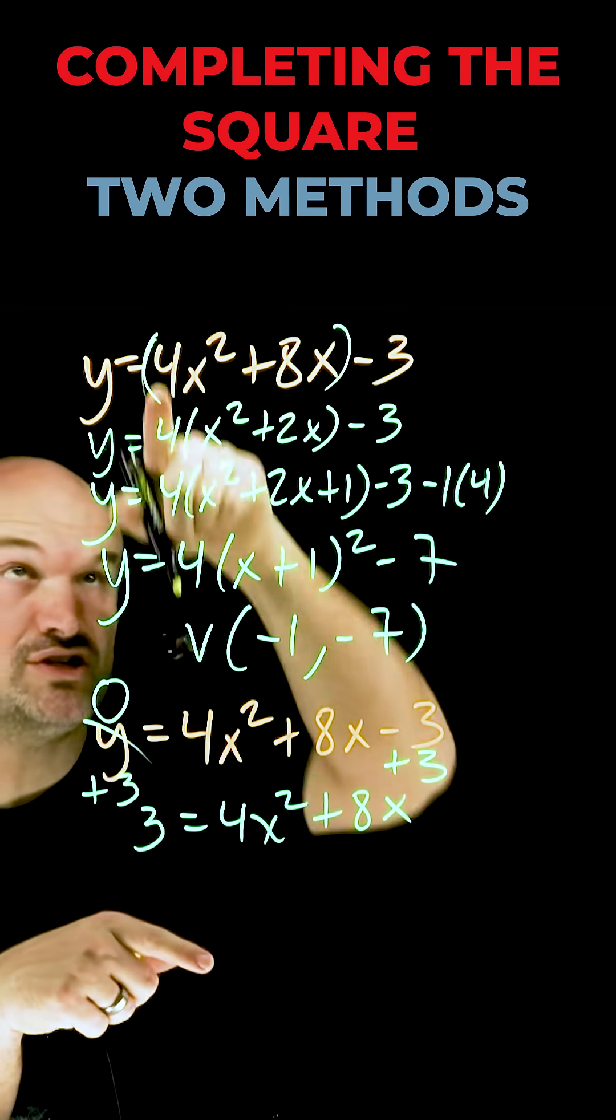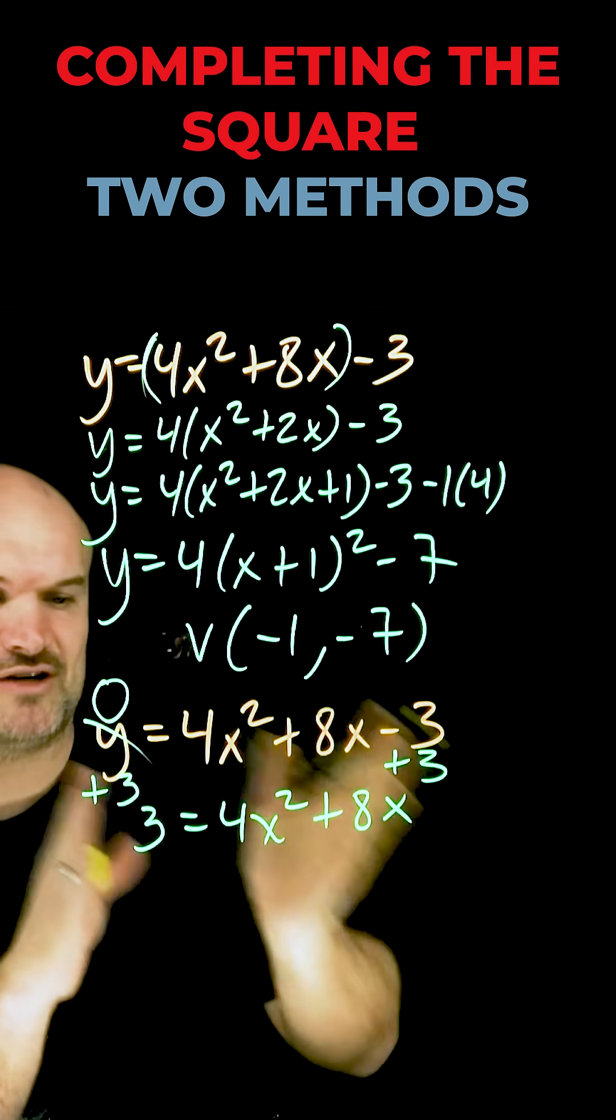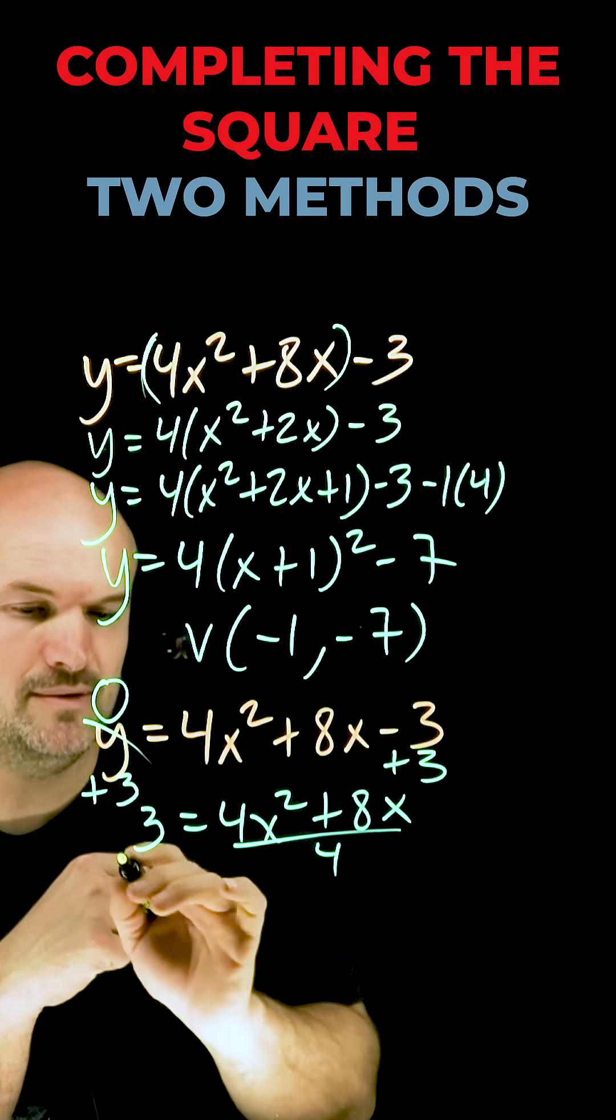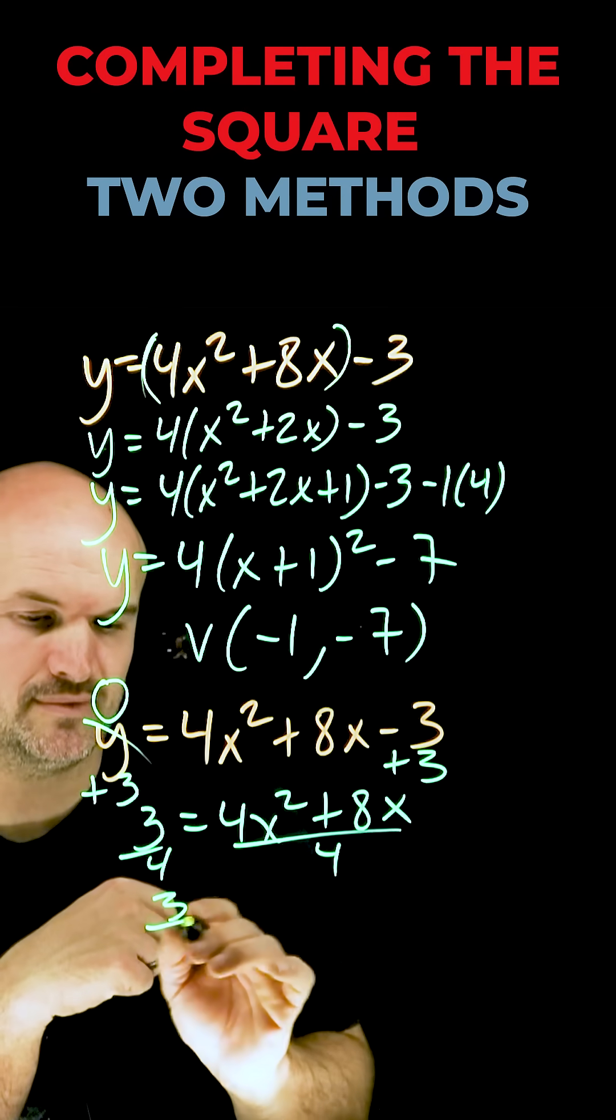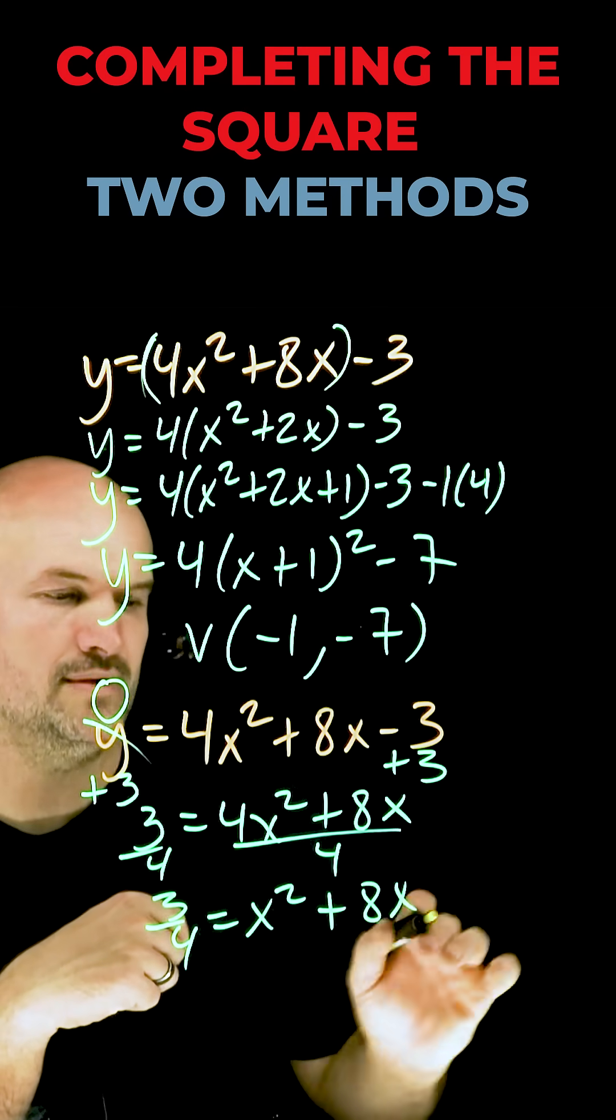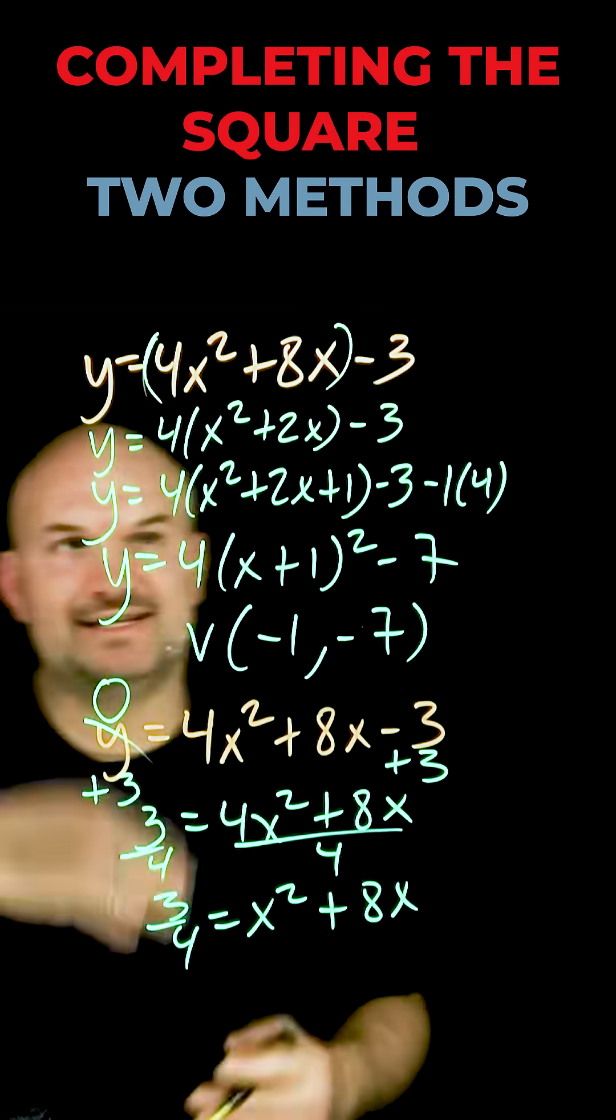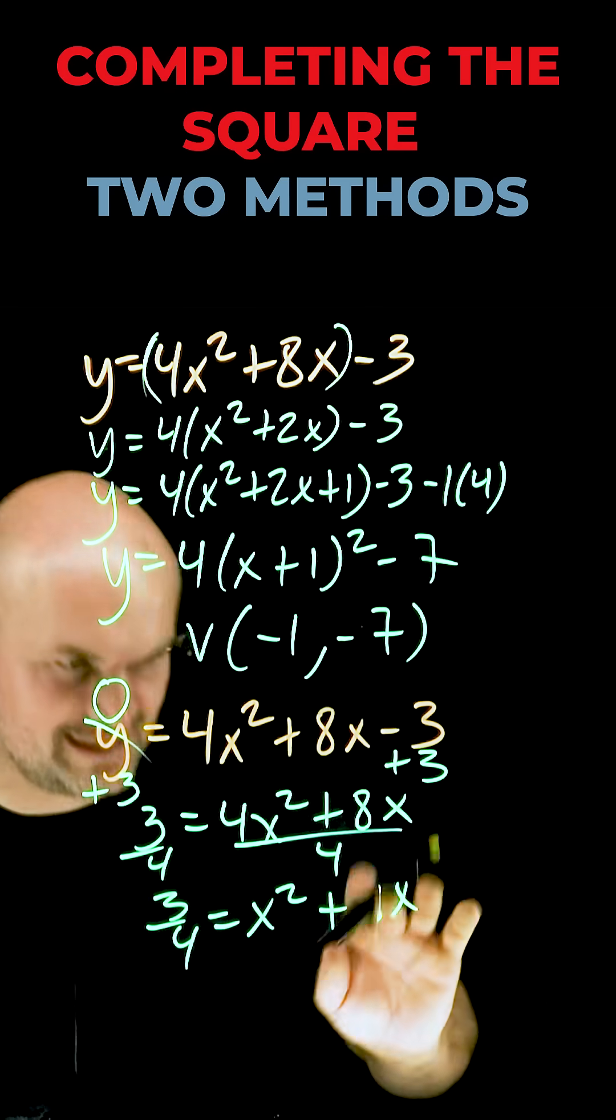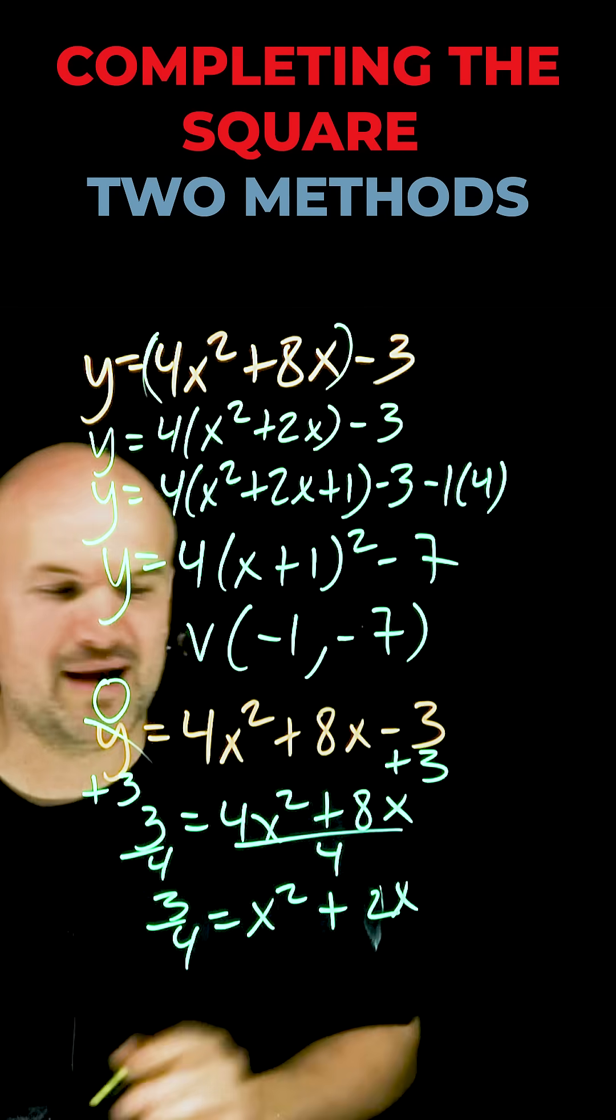Now I need to get rid of the 4 just like I did up there. But rather than factoring out the 4, I'm just going to divide both terms by 4, or both sides by 4. Now same thing, I need to make sure I divide by 4. So 4, that's going to be a 2x.